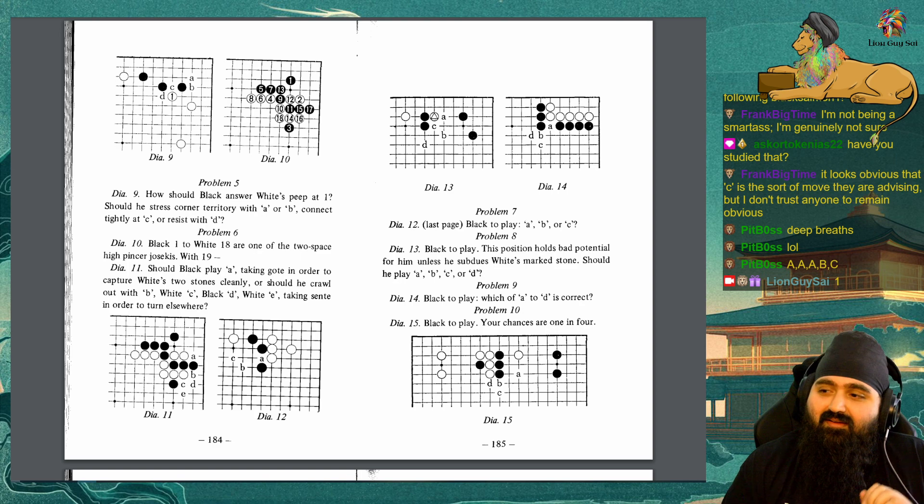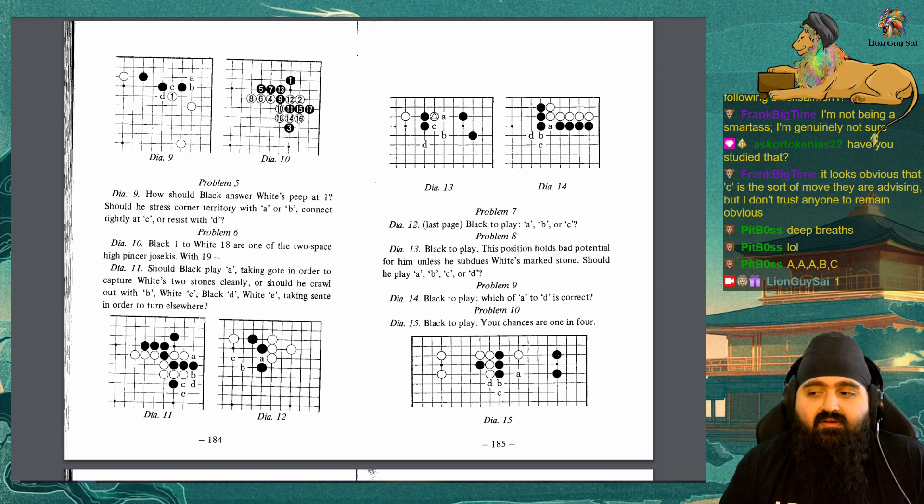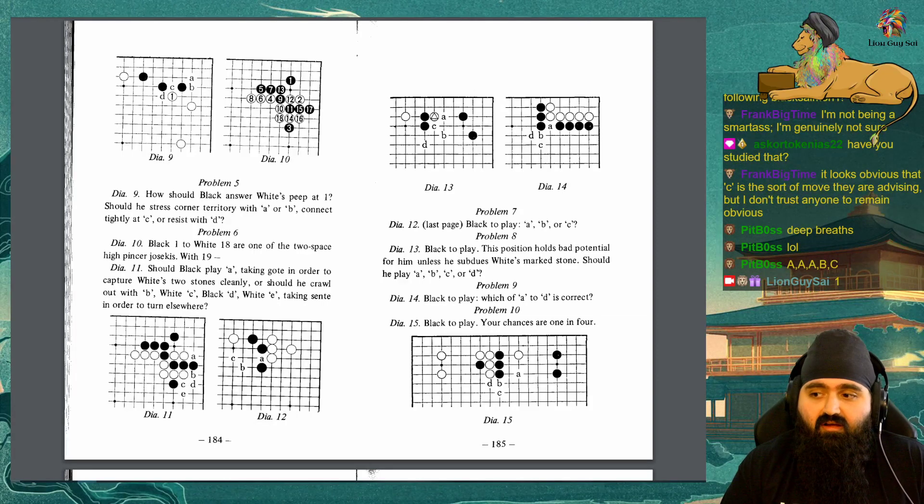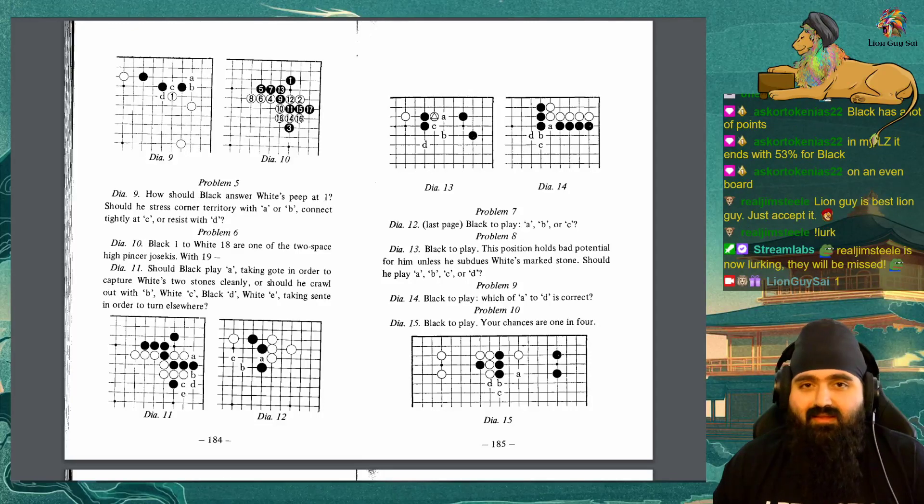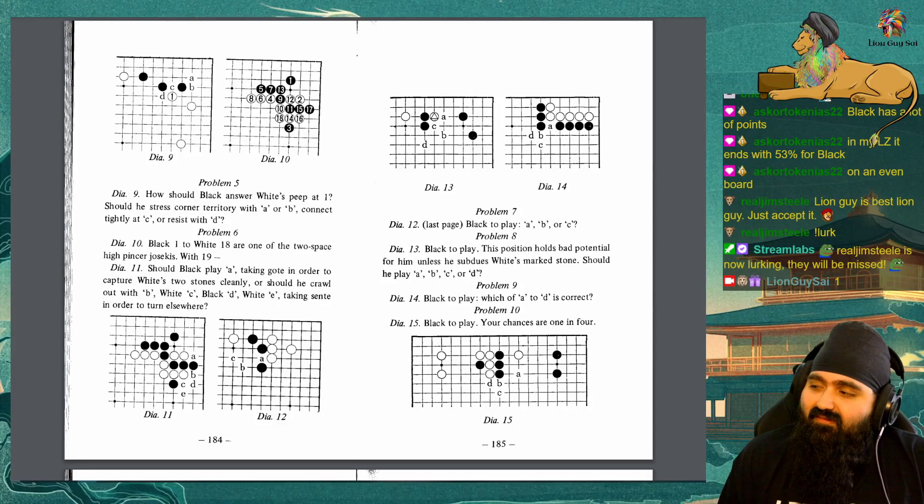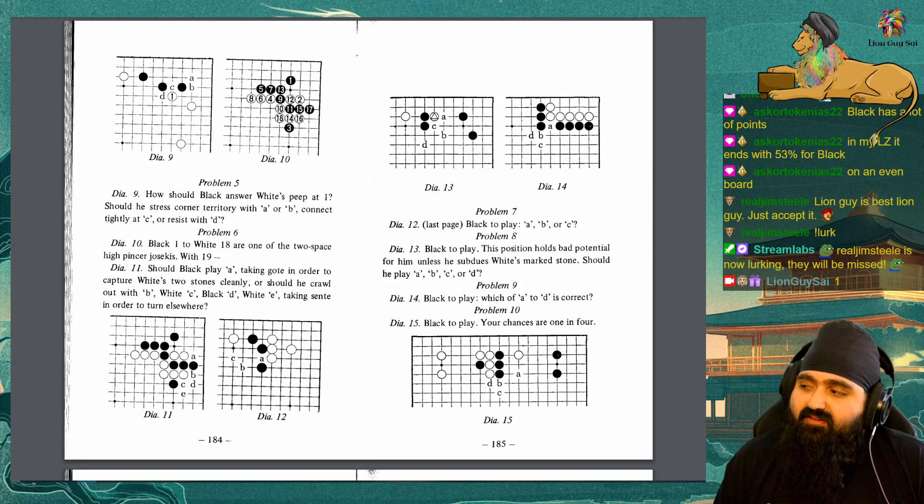Problem 6. Diagram 10. Black 1 to White 18 are one of the two space high pincer joseki. With 19, should Black play at A, taking Gote in order to capture White's two stones cleanly? Or should he crawl out with B, White C, Black D, White E, taking Center in order to turn elsewhere?